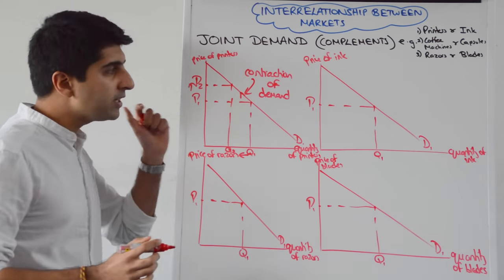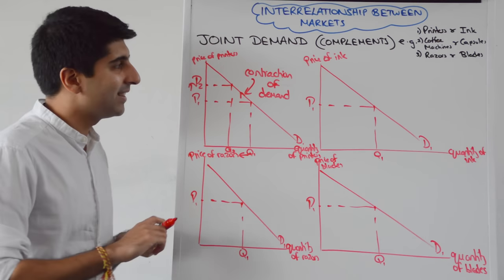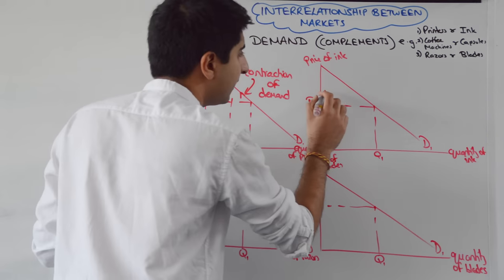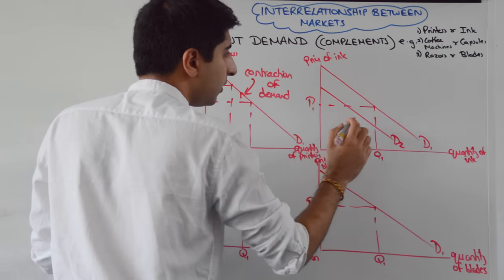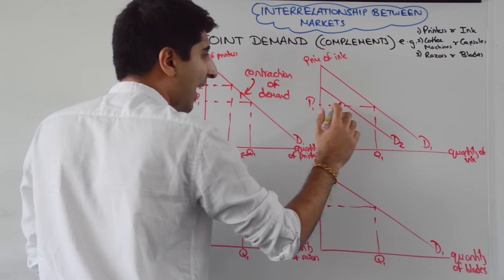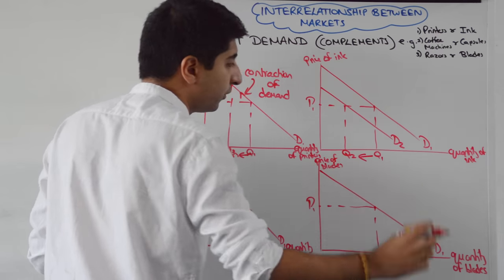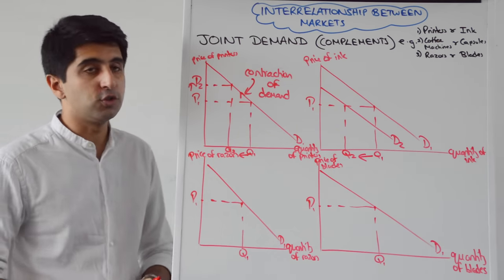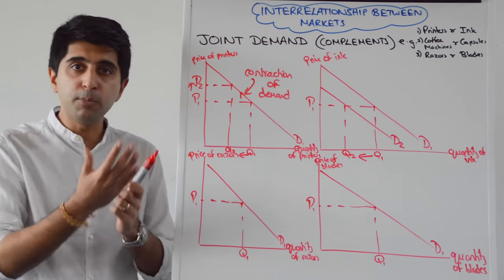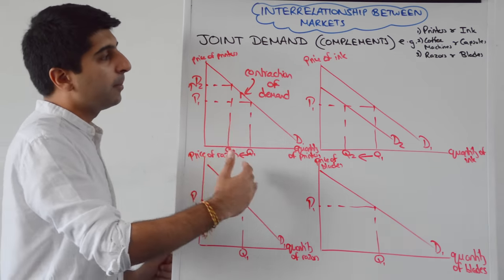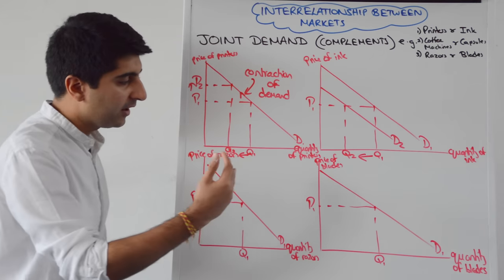So the price of printers goes up. It's going to shift the demand for printer ink to the left, as less consumers are going to be willing and able to buy printer ink, which shifts demand to the left at the same price, causing demand to reduce from Q1 to Q2. The price of printers changing is why we move along the demand curve, but that will shift the demand for a complement — in this case printer ink — to the left.